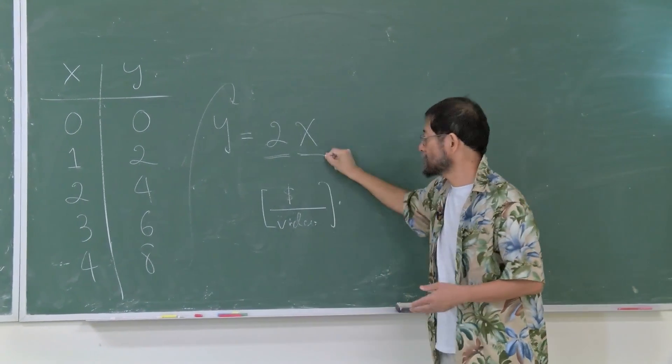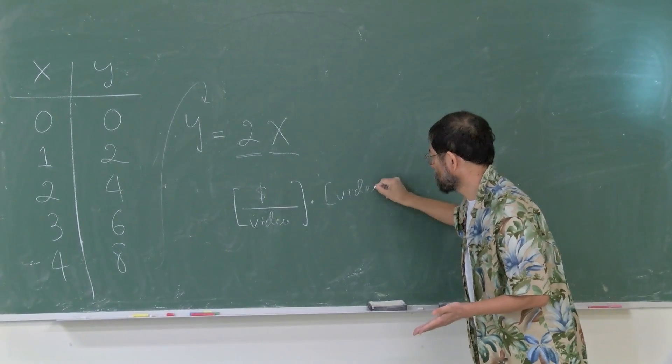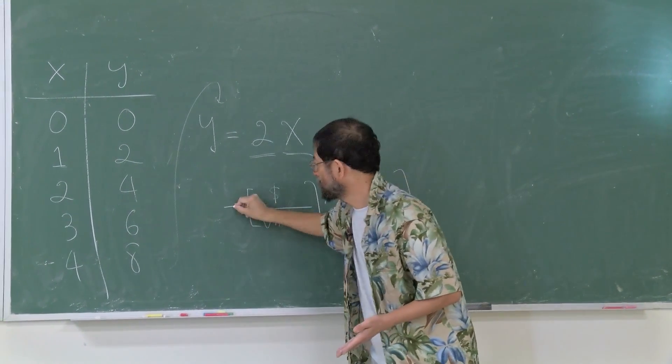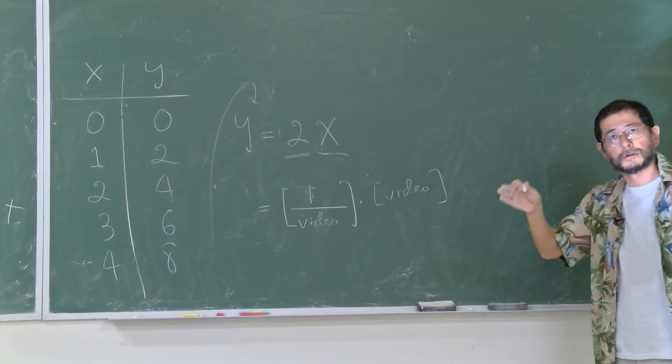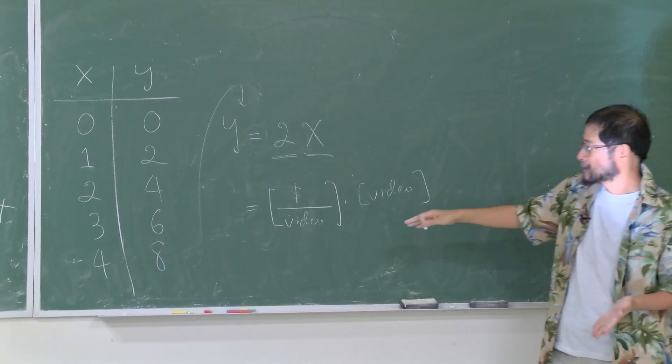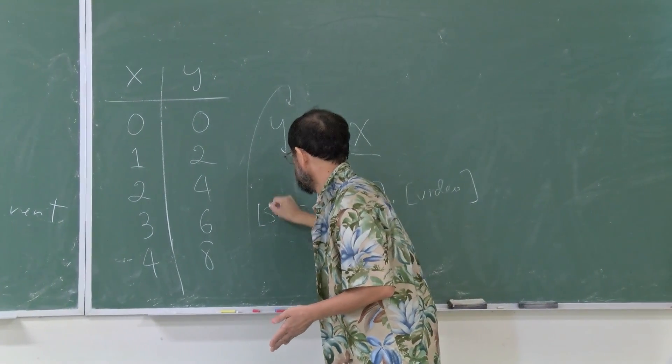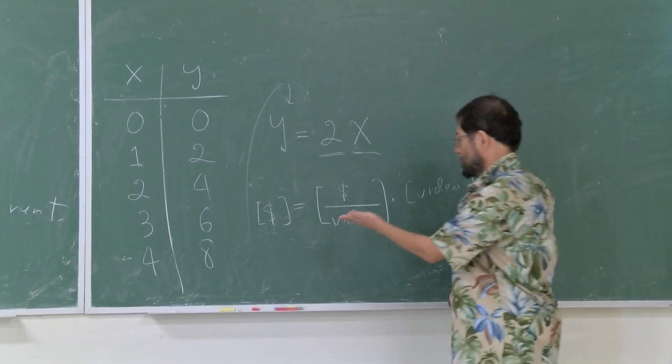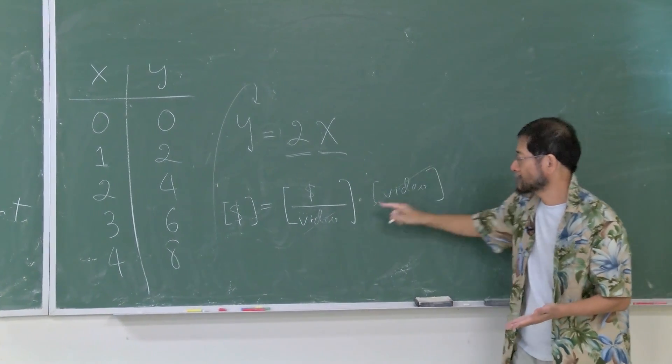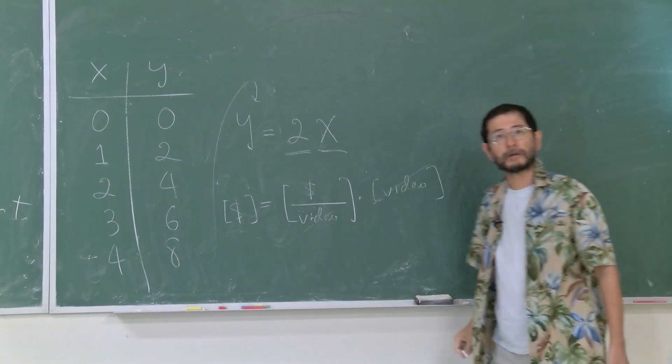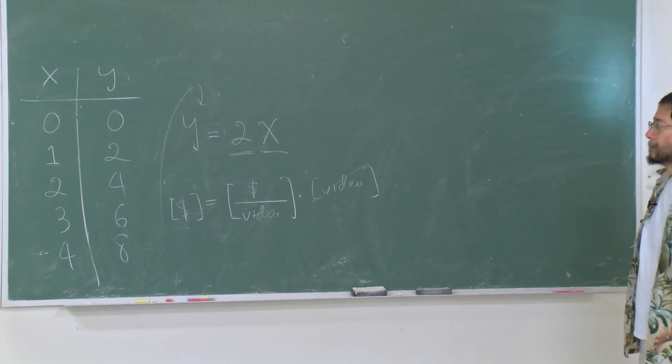The unit of x is the number of videos. Not only the value, but the unit has to agree. The unit for y is dollar. See, the unit for video is canceled, so you get dollar equals dollar. You can also check the units are equal.